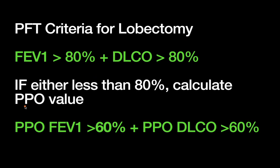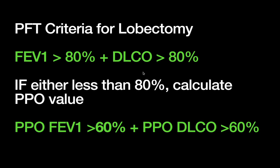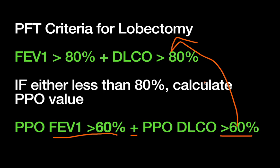If either FEV1 or DLCO is less than 80%, you should calculate a predicted postoperative value for both. The lung has around 19 segments, and your lobectomy will remove X number of those segments. For example, if you're taking out three segments, you'll be left with 16 out of 19 segments — so you take 16 over 19 and multiply by your preoperative values to get predicted postoperative FEV1 and DLCO. A quick shortcut: each segment is roughly 5%, since 100 divided by 19 is approximately 5. If your predicted postoperative FEV1 is greater than 60% and predicted postoperative DLCO is also greater than 60%, you are again thought to have adequate pulmonary reserve to undergo a lobectomy.